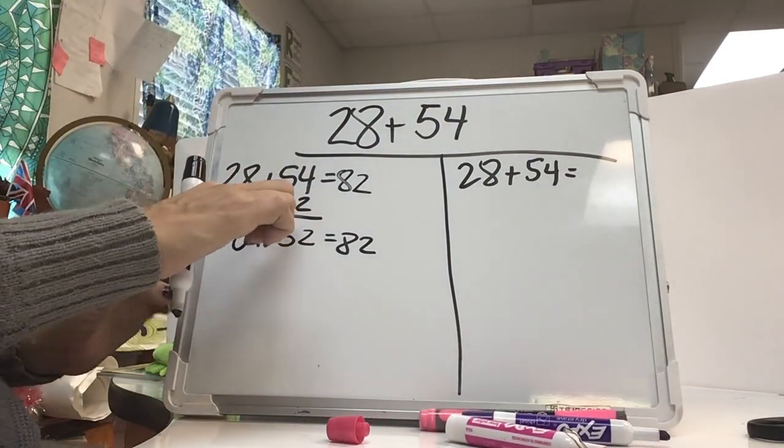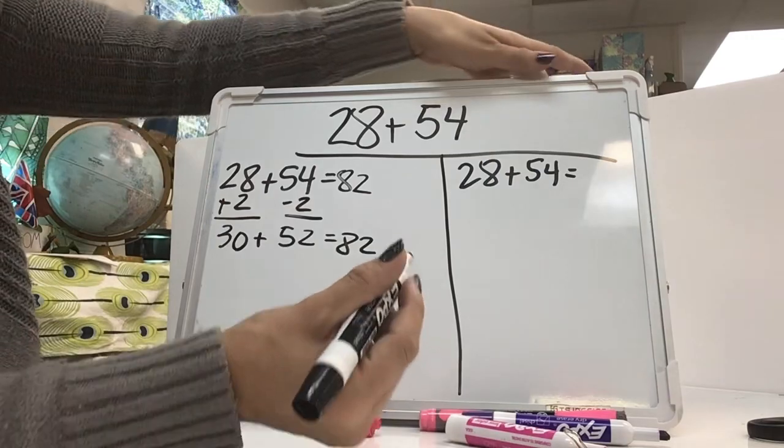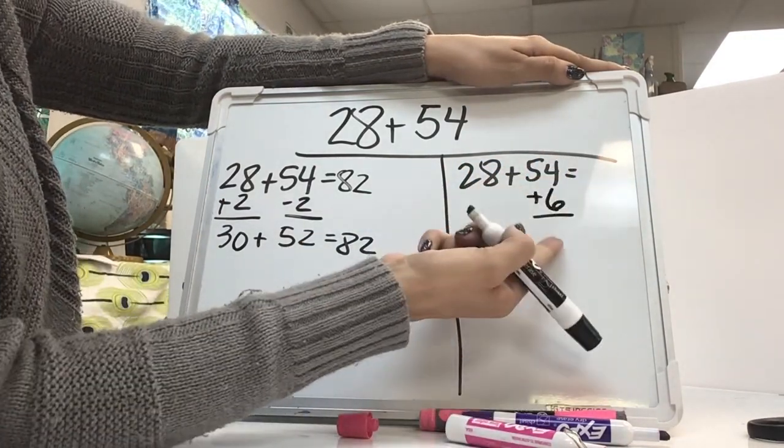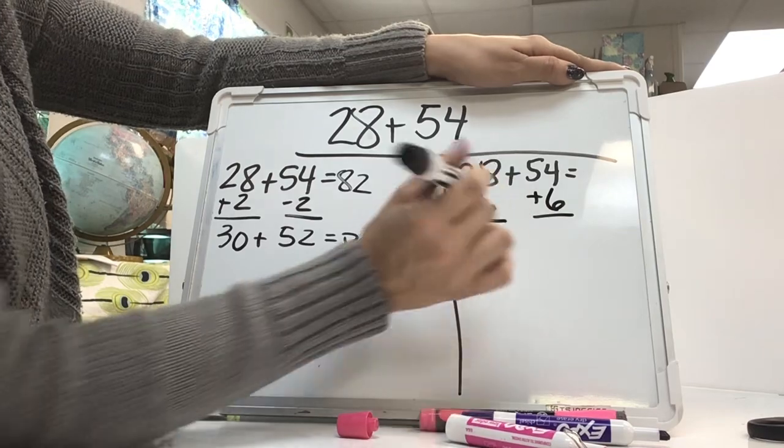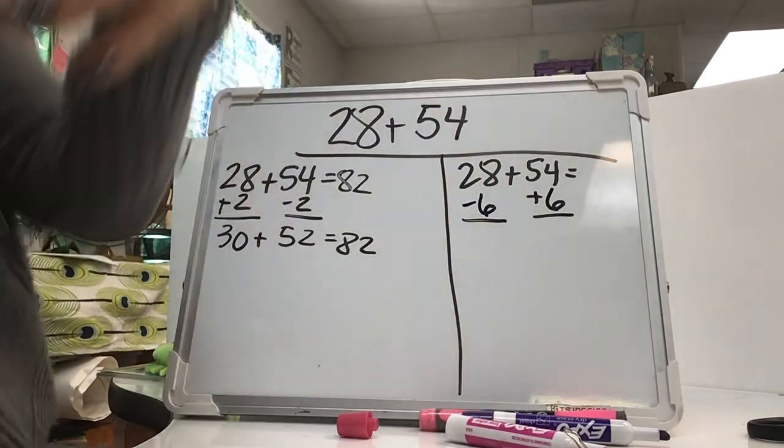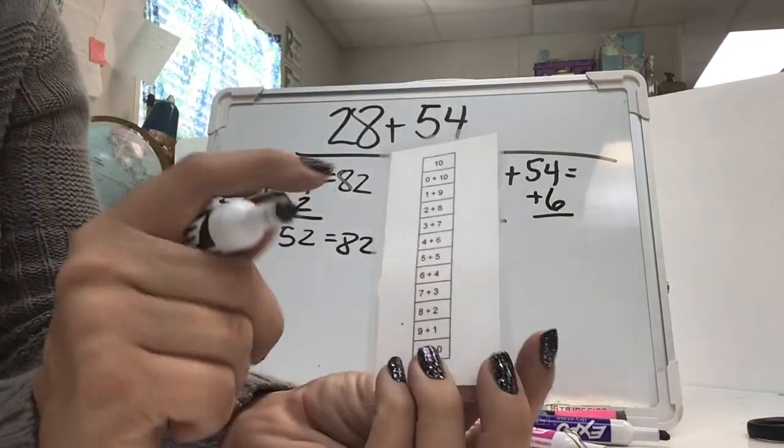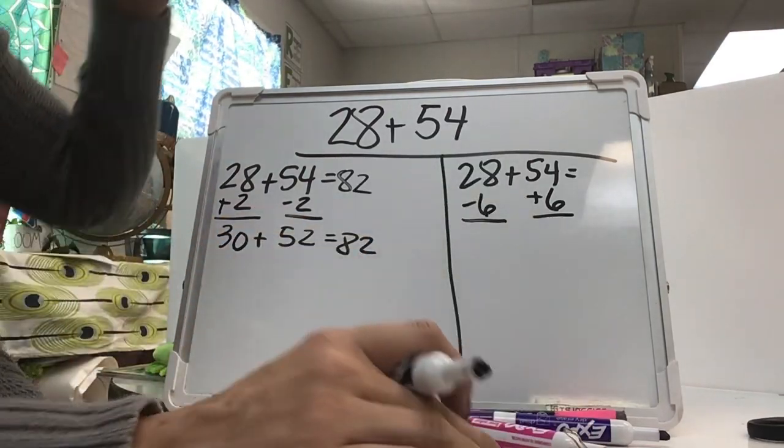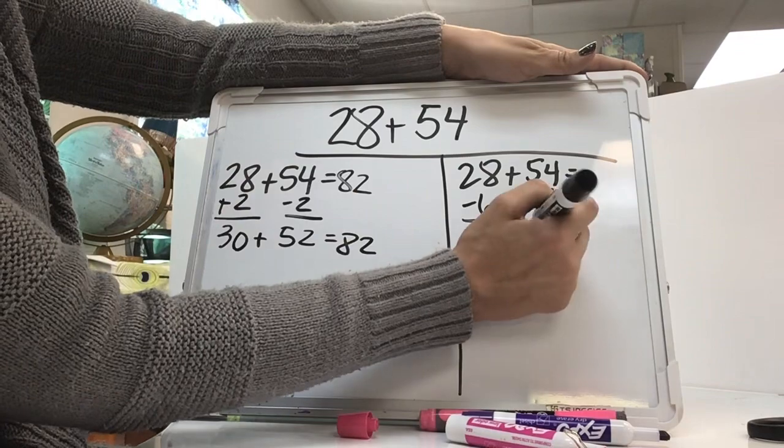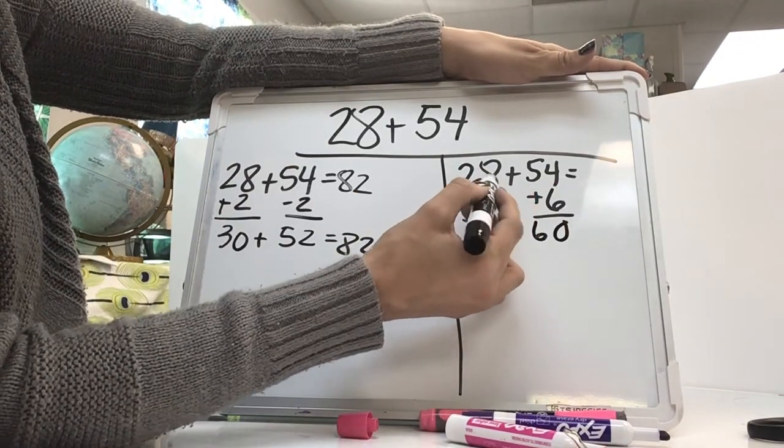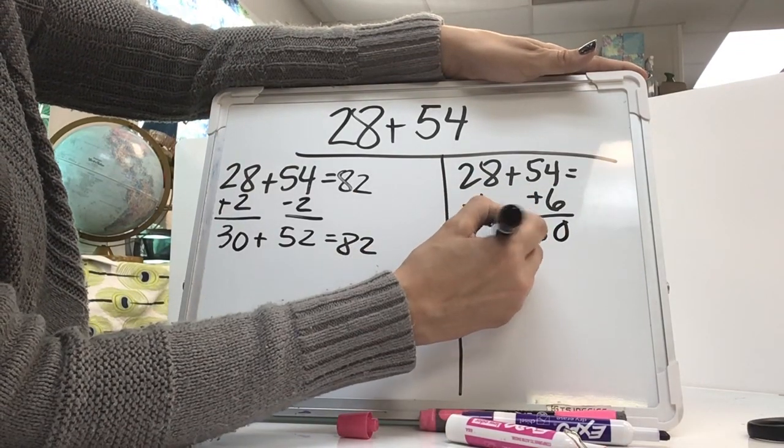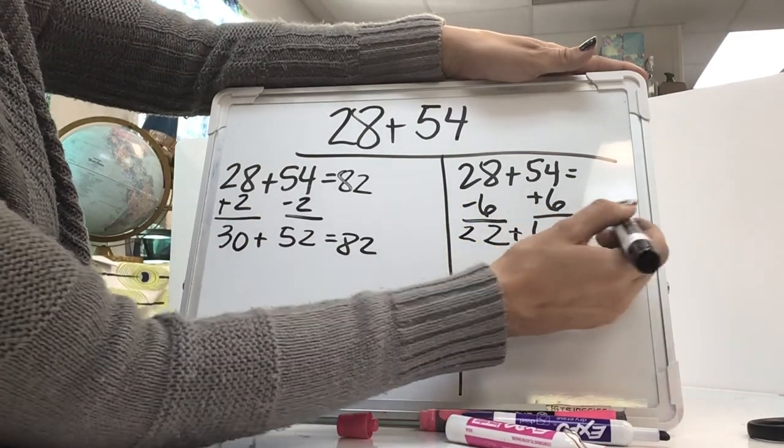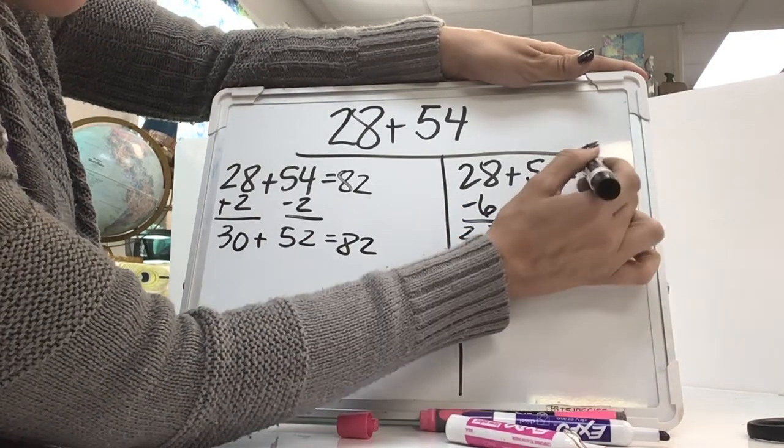For my other equation, I'm going to try to get 54 to the next 10. So I'm going to partner that 4 with a 6. So I'll do plus 6 and minus 6. Remember, knowing your fact families is going to really help you. 4 partners with 6 to get to the next 10. And we're trying to get to the next 10 to make an easy equation to solve. 8 minus that 6 is a 2. So we've got 22 plus 60, which also gives us the sum of 82.